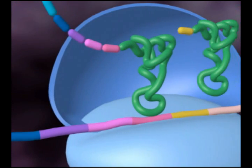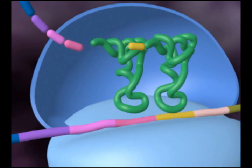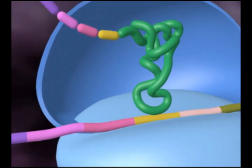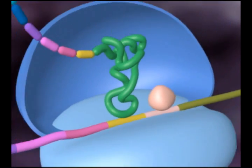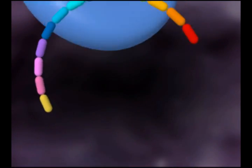Once the ribosomal complex reaches the final codon contained on the mRNA molecule, both the ribosomal complex and the newly formed amino acid chain are released to later become part of a protein.